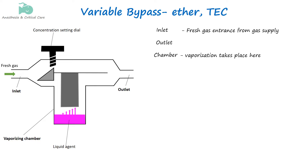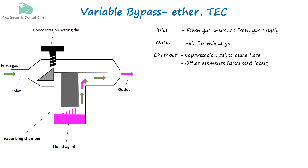The vaporizing chamber features a heating element to assist in vaporization and is designed to maximize contact between the liquid and gas, ensuring efficient vaporization. The outlet is where the vaporized anesthetic mixed with carrier gases exits the vaporizer.